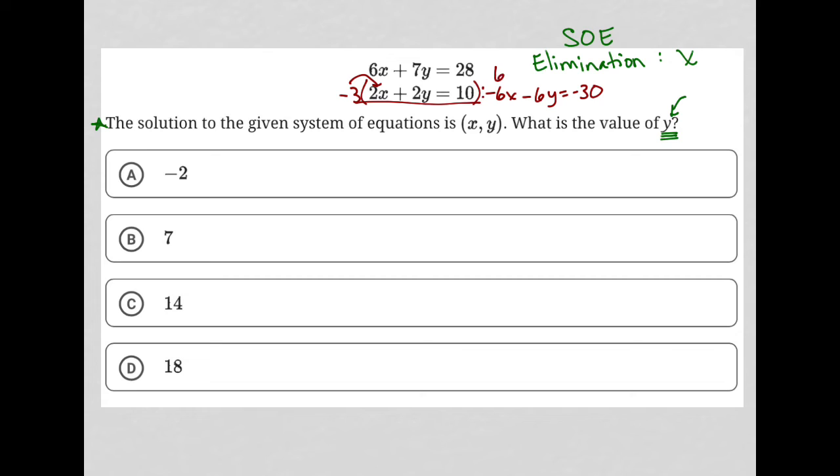The first equation would not change. That would still be 6x + 7y = 28. And here's where the elimination takes place. The 6x and the -6x are gone. 7y - 6y, well, that would just be y. And 28 - 30 would be -2.